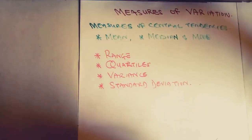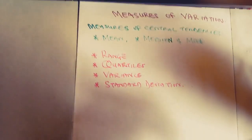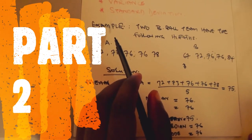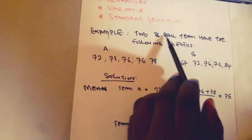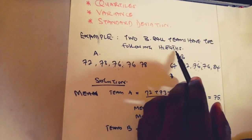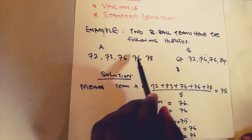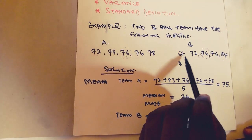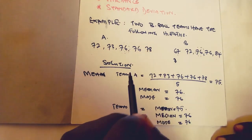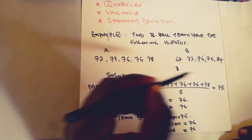In the next video we'll be looking at range, quartiles, variance, and standard deviation. For example, we have this question: two basketball teams have players with the following heights. Team A has 72, 73, 76, 76, and 78. We are asked to calculate the mean, median, and mode — the measures of central tendency — as well as the measures of variation for the two teams.